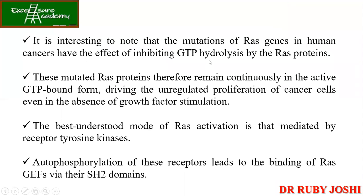It is important to note that mutations of RAS genes in human cancer have the effect of inhibiting GTP hydrolysis by the RAS proteins. Please remember this is an important point. The mutated RAS proteins remain in the active GTP-bound form, which drives unregulated proliferation of cancer cells. There is no need to initiate activation because RAS is always active, and it keeps signaling the cell to proliferate.